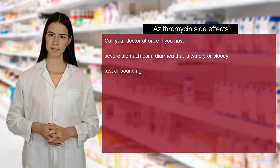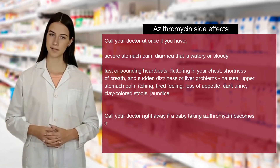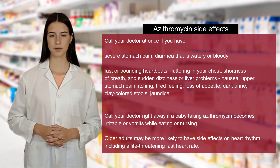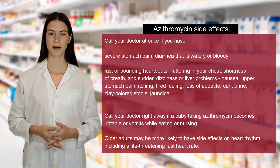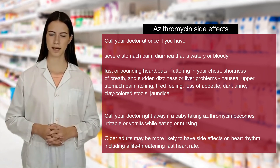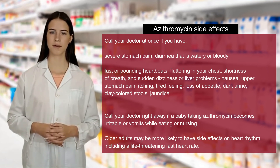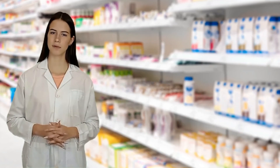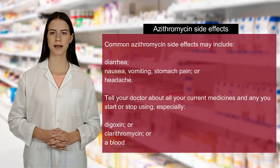Call your doctor at once if you have severe stomach pain, diarrhea that is watery or bloody, fast or pounding heartbeats, fluttering in your chest, shortness of breath, or sudden dizziness; or liver problems such as nausea, upper stomach pain, itching, tired feeling, loss of appetite, dark urine, clay-colored stools, or jaundice. Call your doctor right away if a baby taking azithromycin becomes irritable or vomits while eating or nursing. Older adults may be more likely to have side effects on heart rhythm, including a life-threatening fast heart rate. Common side effects may include diarrhea, nausea, vomiting, stomach pain, or headache.